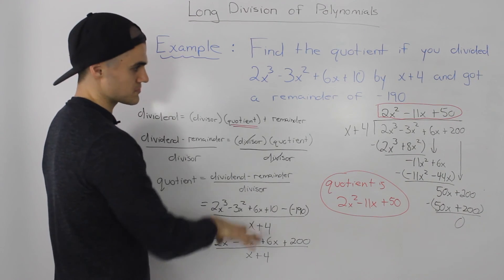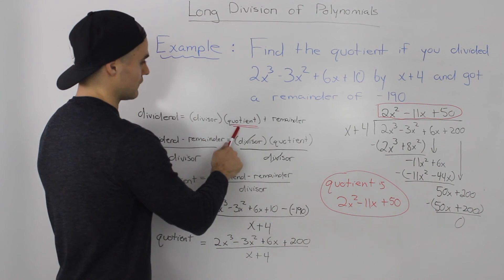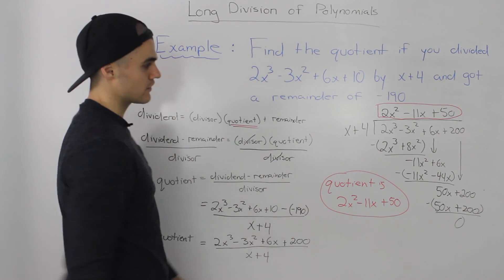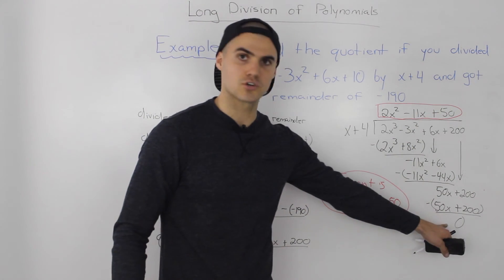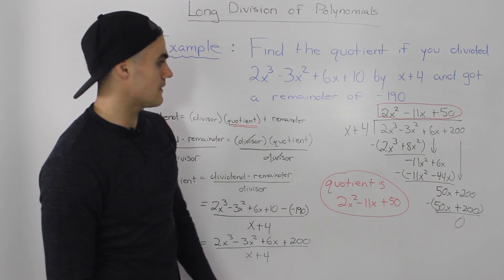Just follow this process and it's pretty simple. Whenever you are finding the divisor or the quotient when you are given all three other things, remember your remainder should always be 0 when you do the division. And that's it.